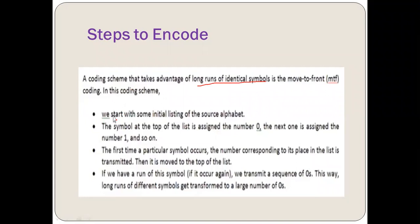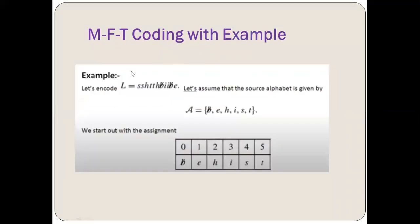In the MTF scheme, the steps are: firstly, we start with some initial listing of the source alphabet that would be given in the question. The symbol at the top of the list is assigned the number zero, then the next one is assigned number one and so on. Third step: the first time a particular symbol occurs, the number corresponding to its place in the list is transmitted as the coding, then it is moved to the top of the list. If we have a run of this symbol occurring again, we need to transmit a sequence of zeros. This way, long runs of repeated symbols get transformed to a large number of zeros.